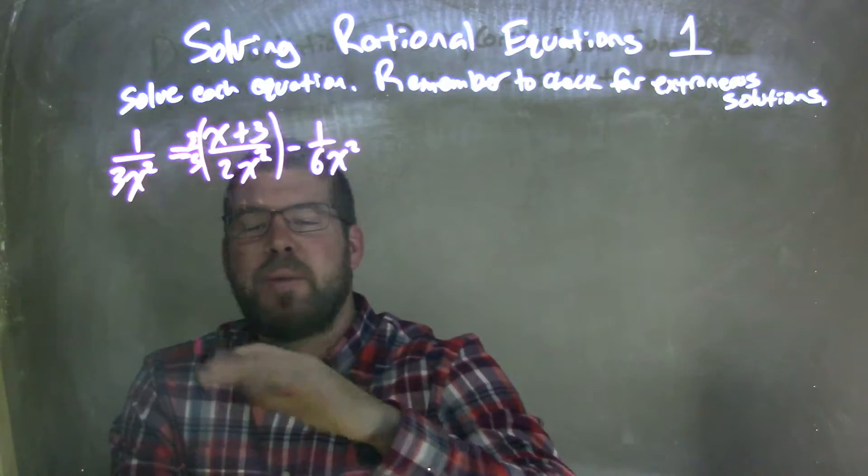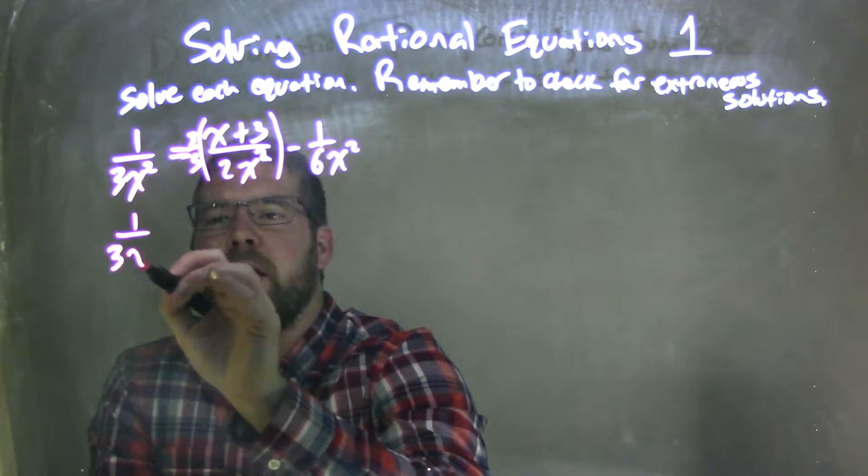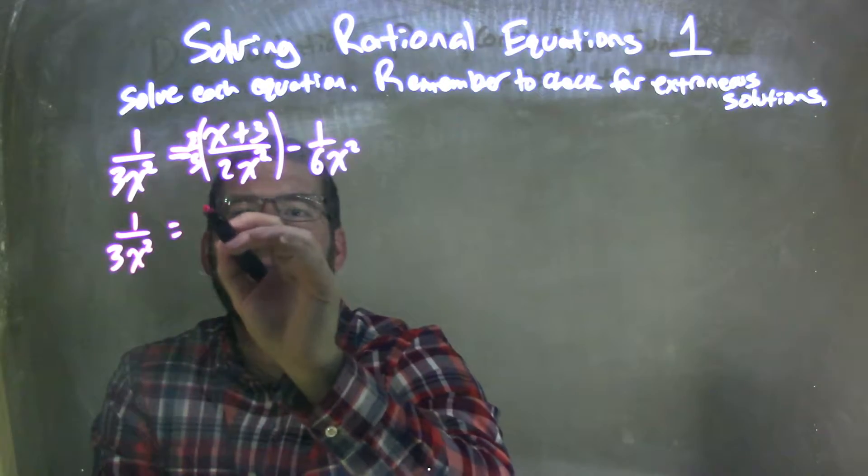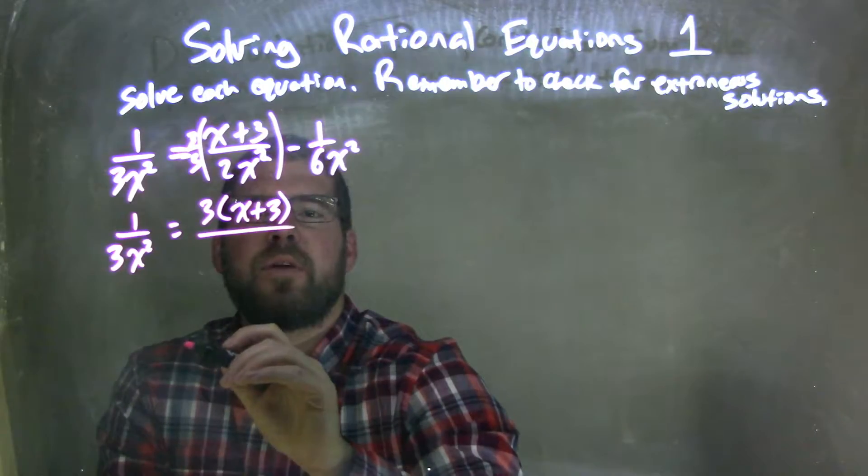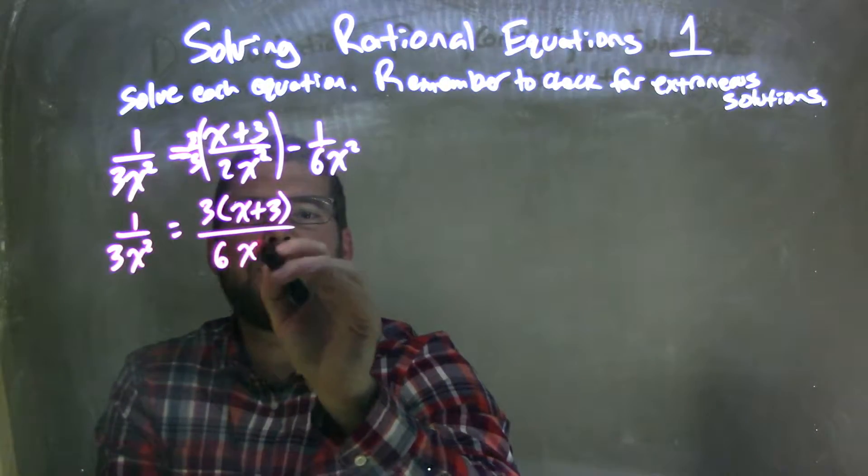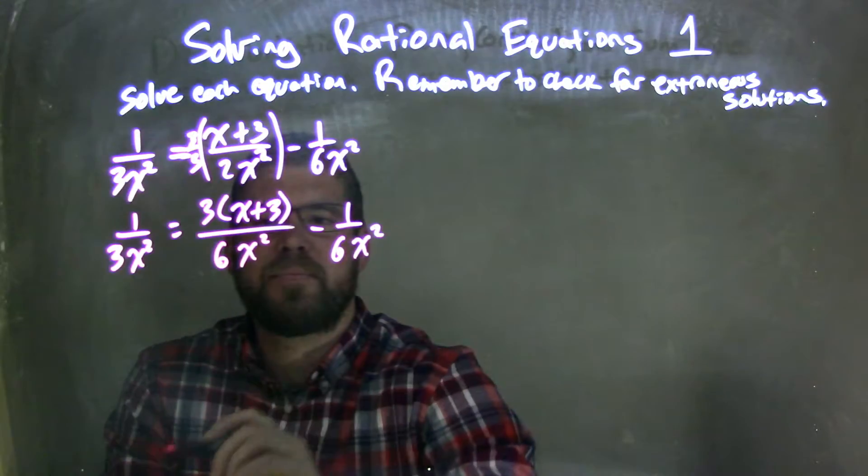So I'm not really changing it, I'm just making it look different. I'm going to have 1 over 3x squared on the left, and then 3 times x plus 3 over 6x squared, and then we're minusing 1 over 6x squared.